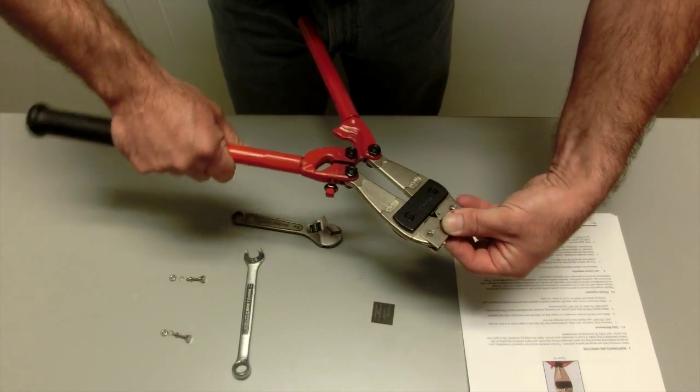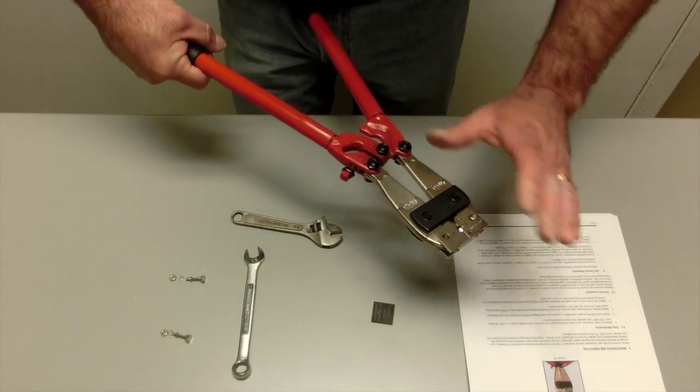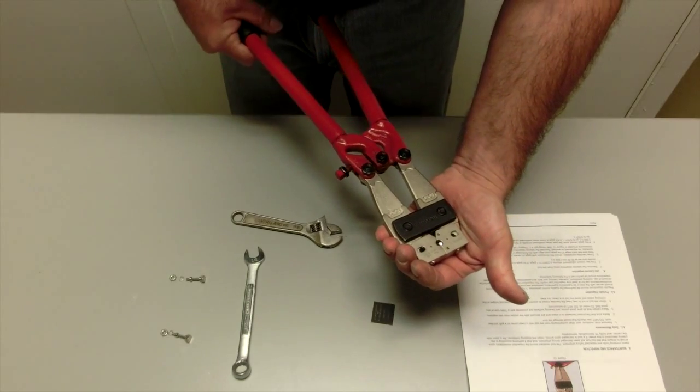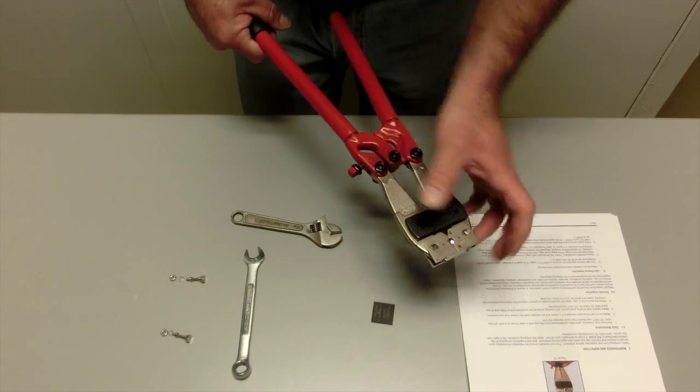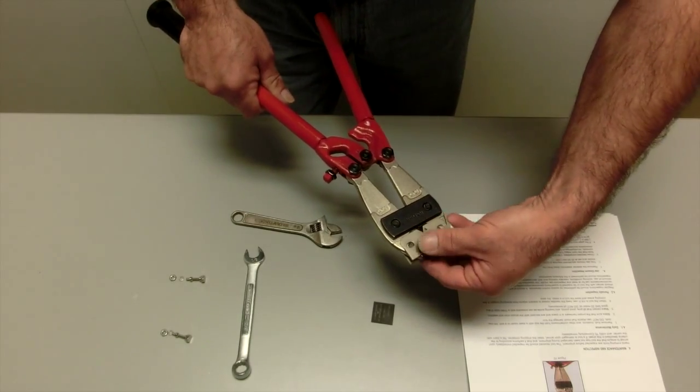Just assemble them in and just like you're crimping the terminal, you're going to close the tool on those dies. What that does is it re-bends this part here and opens the jaws to begin the adjustment process.